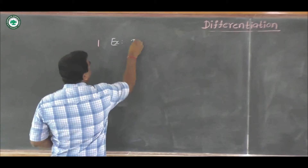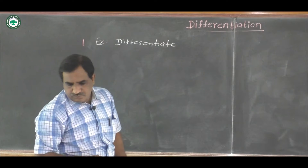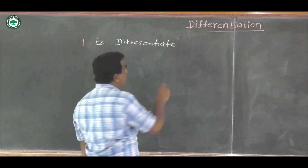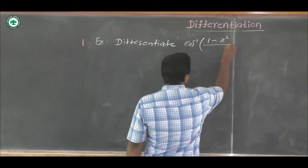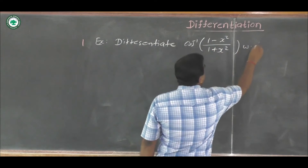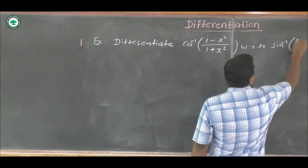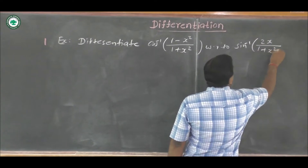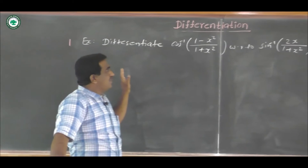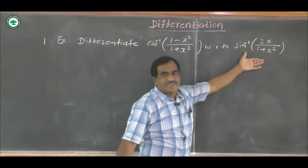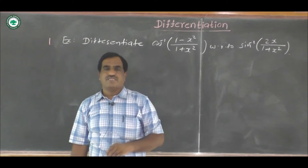Now, the example is: differentiate cos inverse of (1 minus x square upon 1 plus x square) with respect to sin inverse of (2x upon 1 plus x square). This is the example of differentiation of one function with respect to another function. Here we have to say the first term as u and the second term as v. So u equals cos inverse of (1 minus x square upon 1 plus x square) and v equals sin inverse of (2x upon 1 plus x square).